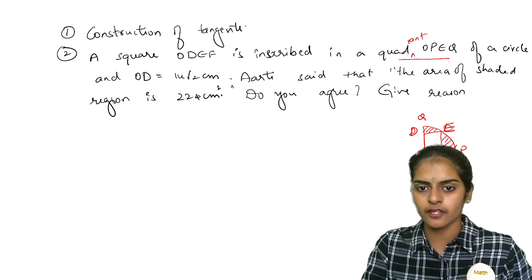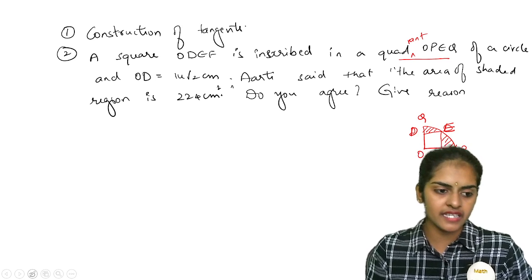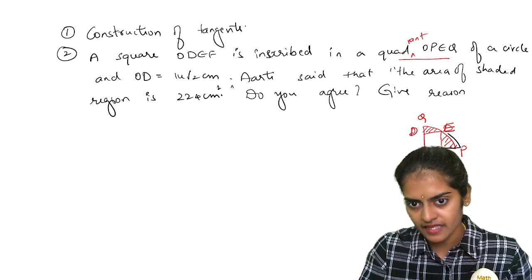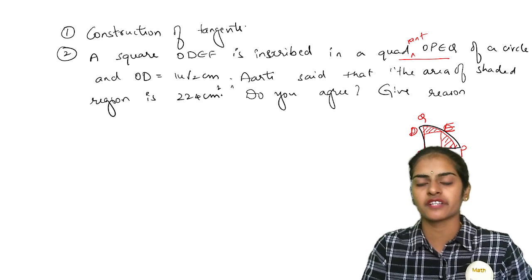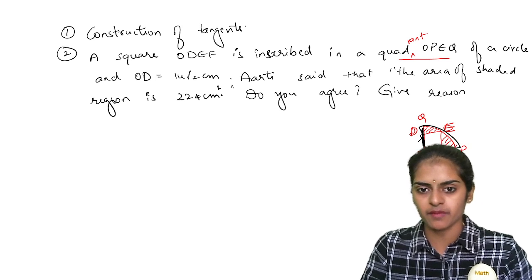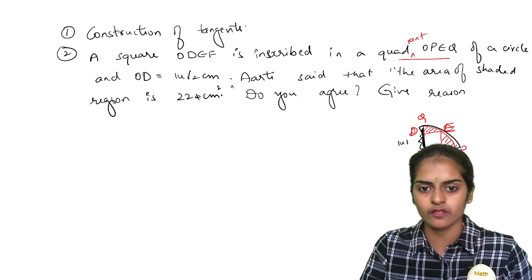This is PEQ. OPEQ. So this is a quadrant of the circle. So OD is given to you, this part is given. Only this part is given as 14 root 2.